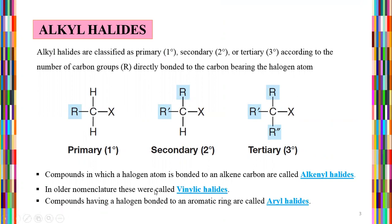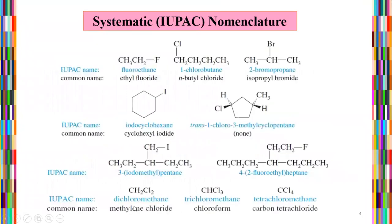Compounds in which the halogen atom is bonded to an alkene's carbon are called vinyl halides. Compounds having a halogen bonded to an aromatic ring are called aryl halides.